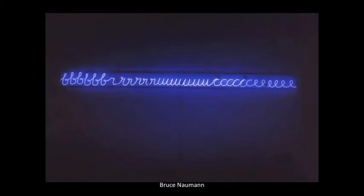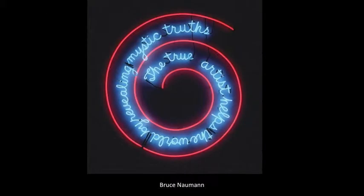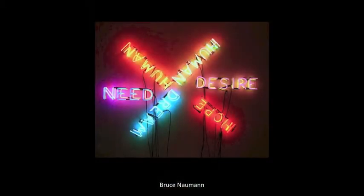Some artists use image and text to point out the irony and absurdity of life. When Bruce Nauman left art school, he didn't know what to do. One day he had the realization: 'If I was an artist and I was in the studio, then whatever I was doing in the studio must be art.' He began documenting with film what he did in the studio. Because he was so poor, this often consisted of simple actions. Later his work began exploring the use of language and visual puns, and the inherent problems with clear communication.